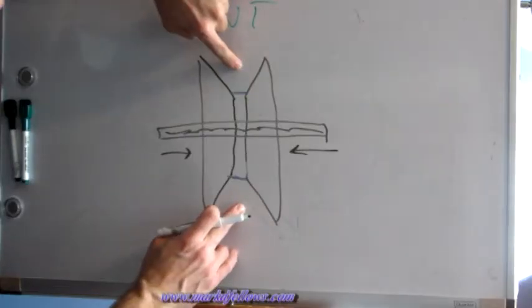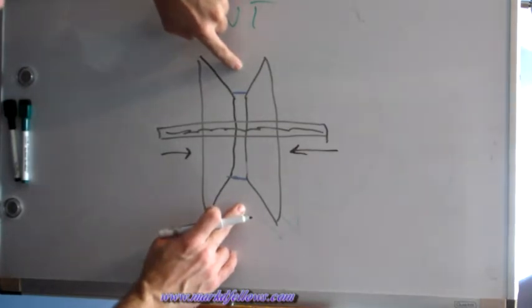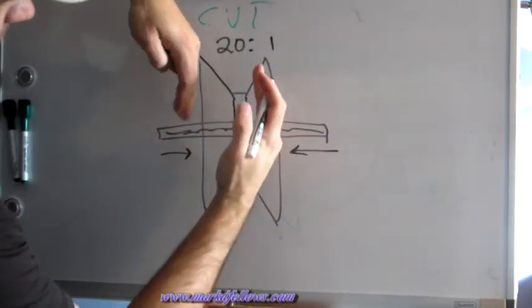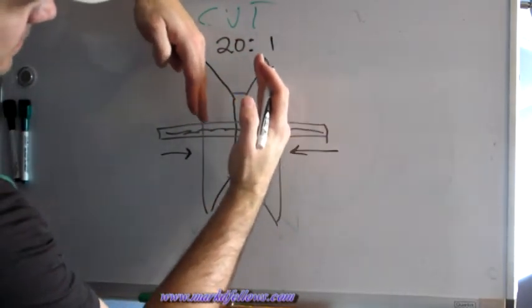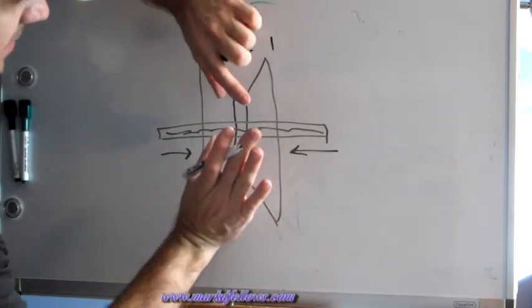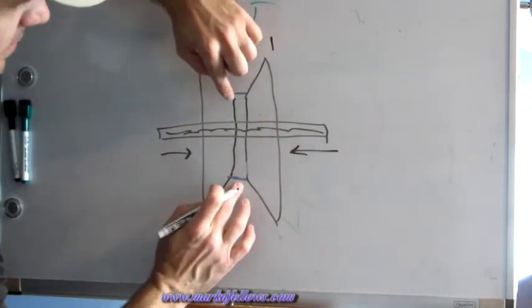Then when the car slows down and it wants a higher gear ratio, let's say it wants to go back to 20 to 1, these variators are going to move out, and that belt is going to ride down in the groove of the variator.